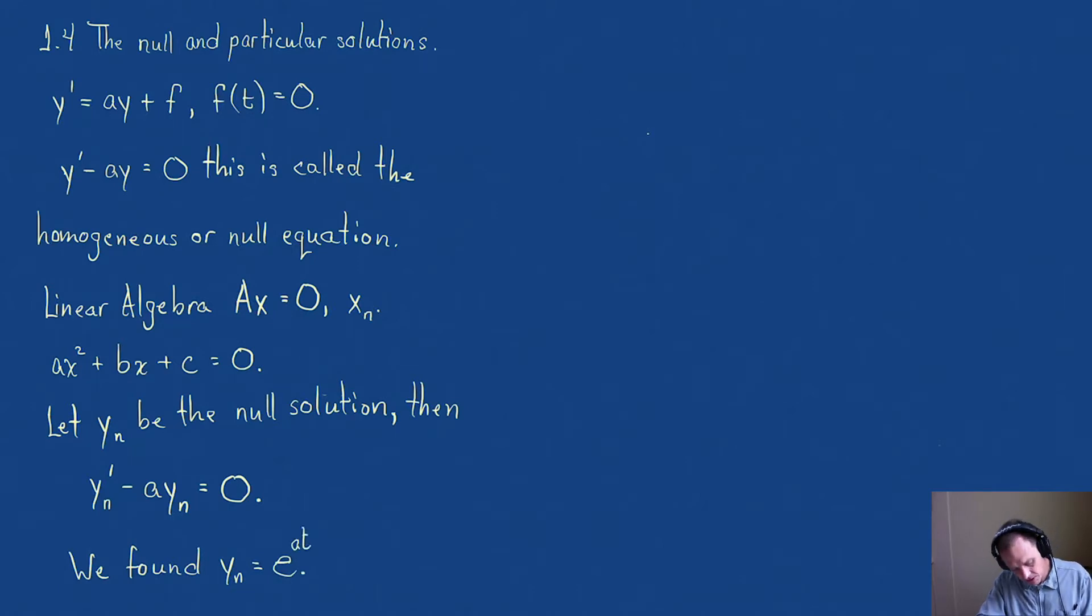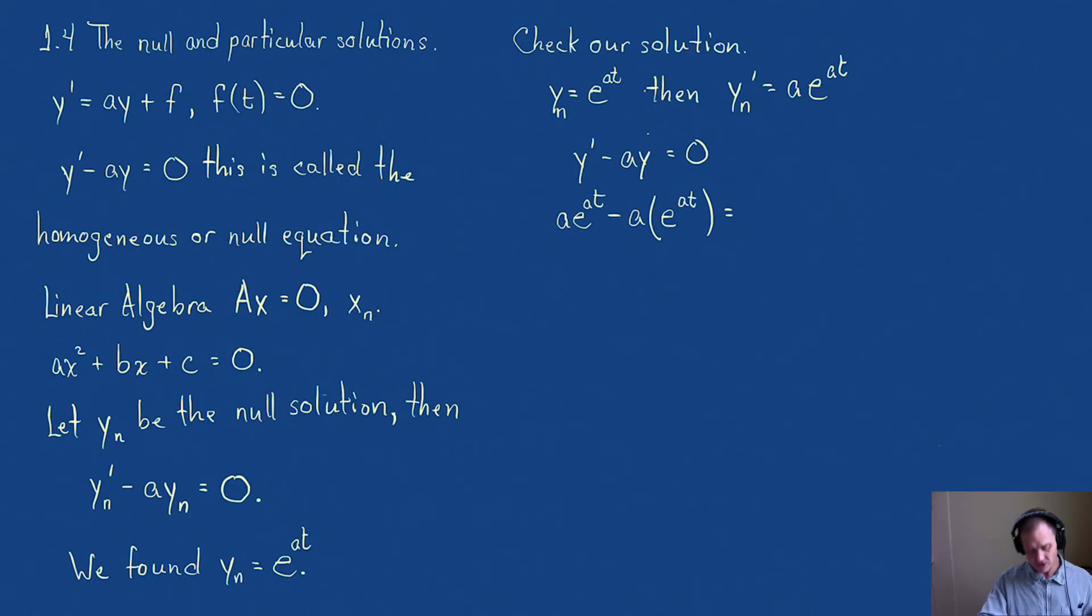Well let's check that. Let's check our solution. So if we have y = e^(at), then if I take the derivative y_n' = ae^(at). Now let's substitute them into the original differential equation. I have ae^(at) - a times e^(at), and you can see right off that those are just like terms. They're opposites, so those cancel. Zero.